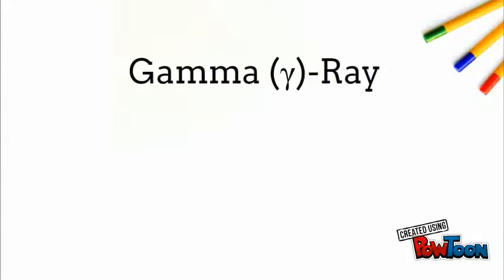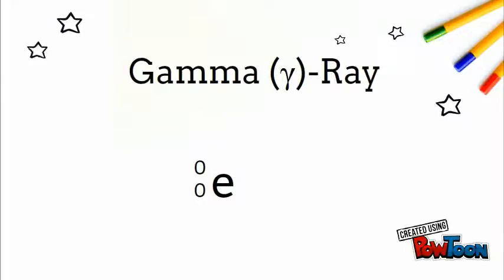The next product is the gamma ray, which is the most complicated to understand conceptually, but the easiest to figure out in an equation. A gamma ray is a highly energetic photon emitted from an unstable nucleus. Since they are electromagnetic rays, they have no charge or mass.